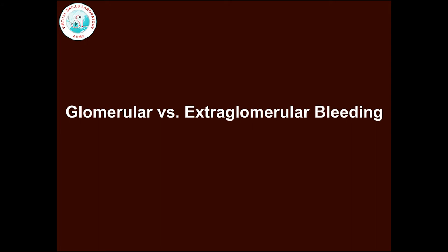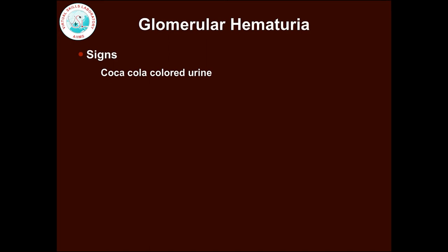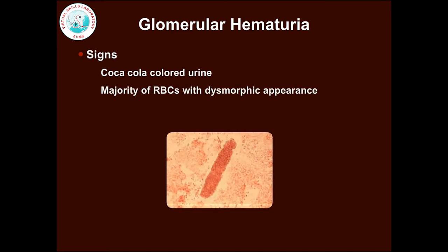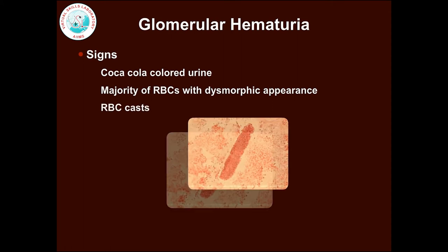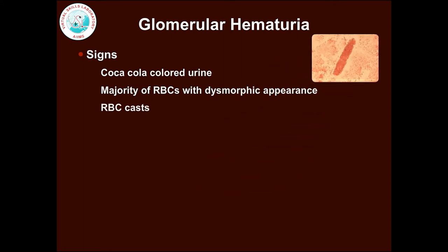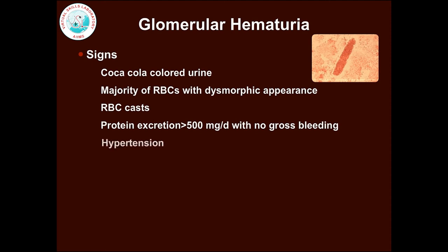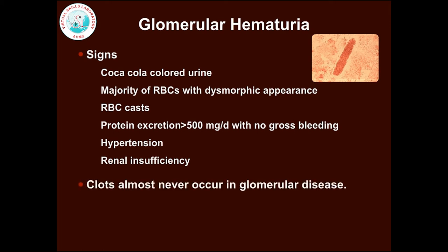It is important to decipher whether the bleeding is glomerular or extraglomerular. Signs that indicate glomerular hematuria are: presence of cola-colored urine, majority of RBCs showing dysmorphic appearance, presence of RBC casts, association with protein excretion with no gross bleeding, and presence of hypertension or renal insufficiency. Blood clots almost never occur in glomerular disease.